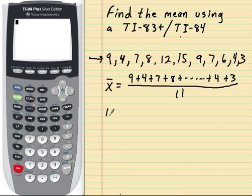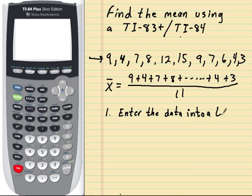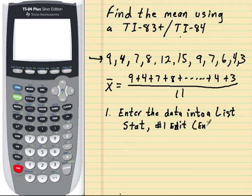So here's the first step of finding the average. You want to enter the data into a list. And you'll get comfortable doing that, and the way you do that is you hit the stat button. And then you hit the number 1, which is the edit. You just hit enter. You hit the enter button on number 1.